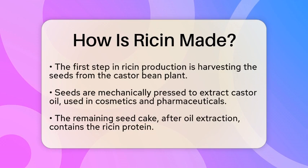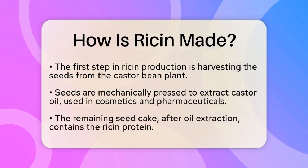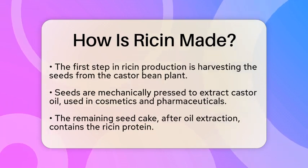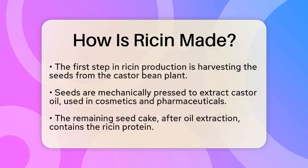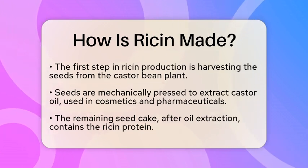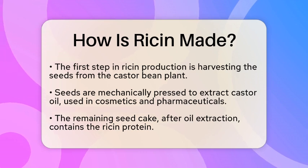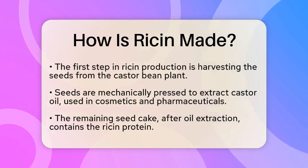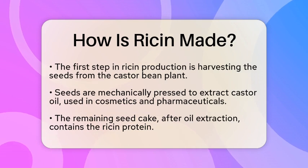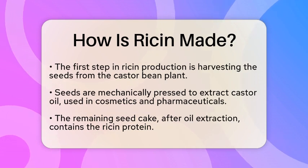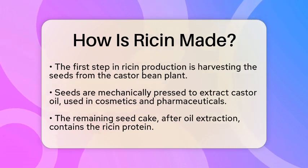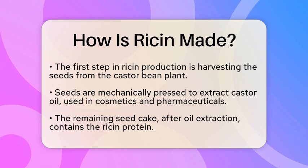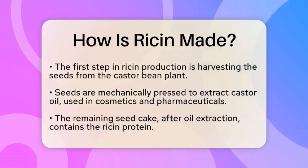To create ricin, the first step involves harvesting the seeds from the castor bean plant. Once collected, the seeds are subjected to mechanical pressing to extract castor oil. This oil is used in various industries, including cosmetics and pharmaceuticals. However, the remaining seed cake — the solid residue after oil extraction — contains the ricin protein.